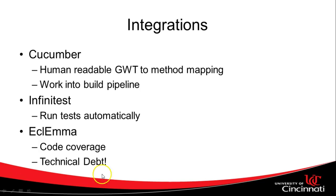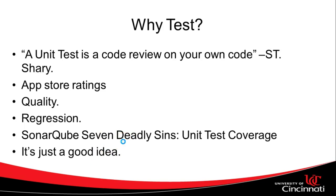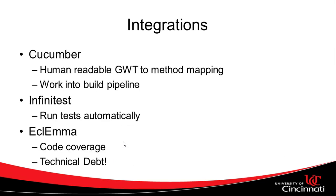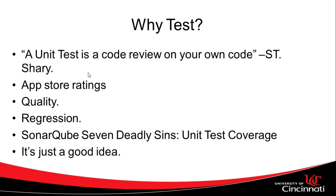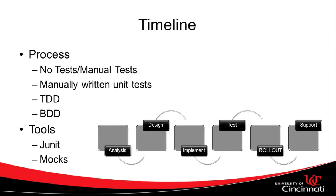We talked about SonarQube's seven deadly sins, one of which is lack of unit test coverage. We need to be able to measure unit test coverage, and for that we use a tool called Echolema. This runs our unit tests and gives us a coverage report on how much of our code is covered. It shows full coverage in green, no coverage in red, or partial coverage of a conditional statement like an if-test in yellow. Several of these features are also built into Cucumber. SonarQube will give you a statistical analysis of your technical debt including unit test code coverage. These are different options you can use depending on which tool set you choose for your project.